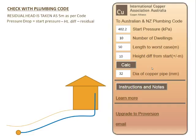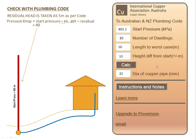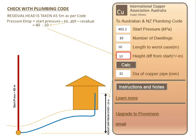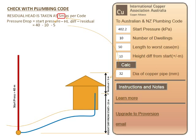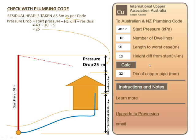The plumbing code requires us to find the pressure drop, which is the start pressure minus the height difference minus the residual head. Our start pressure was 40 meters, our height difference was 10 meters, and our residual head was 5 meters. We work out a pressure drop of 25 meters, and that's our hydraulic grade line.